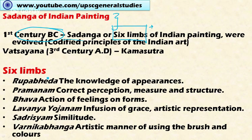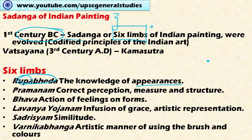The first of the six limbs is Rupa Beda — Rupa means appearances, so Rupa Beda means the knowledge of appearances; appearances must be proper in painting. The second principle is Pramanam, meaning correct perception, measurement, and structure — there should be proper measurement between the different organs of the body.